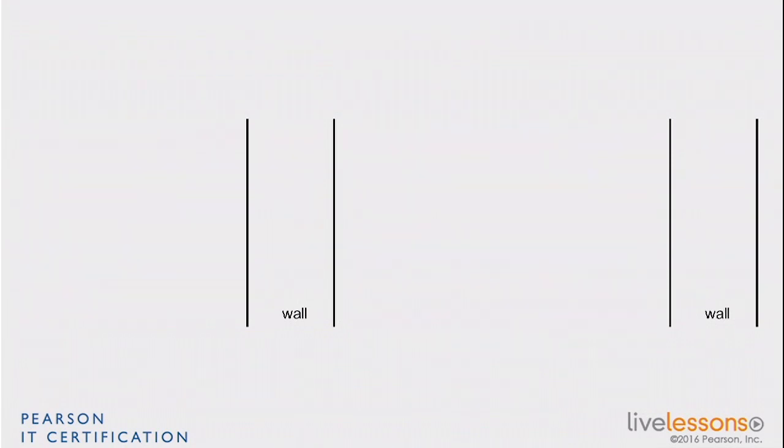So what happens? When that wave hits that wall, the energy of the wave is absorbed by the material of the wall. If it's entirely absorbed inside the wall, well there is no wave going outside on the other side.